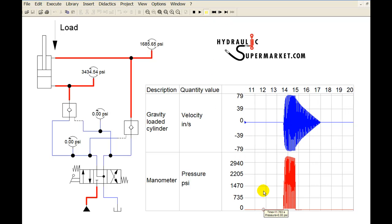As the state diagram shows, the pilot pressure opening the check valve on the cap end of the cylinder fluctuates wildly.